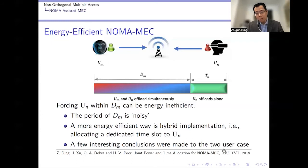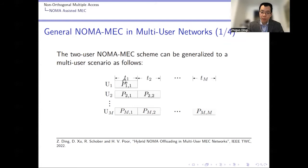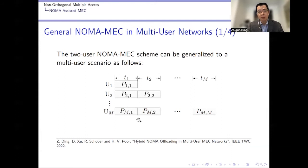We spent quite a long time thinking about how to extend this protocol to the multi-user scenario and whether the two-user conclusions remain valid. The protocol extension itself is straightforward: create M time slots for M users, invite the user with the most urgent task to upload first, allow other users to spend energy uploading simultaneously if they wish, then at the end of each time slot force the next user to finish uploading.